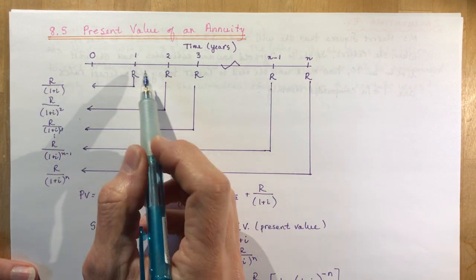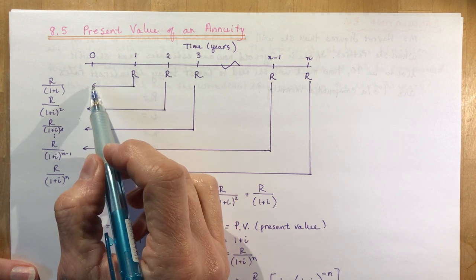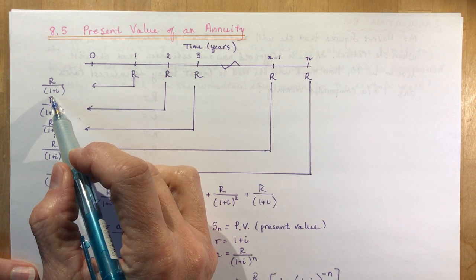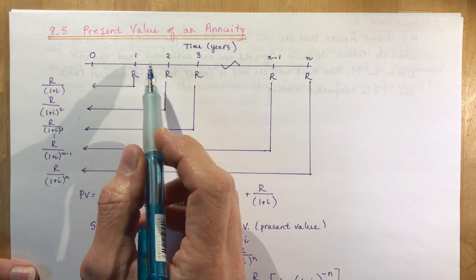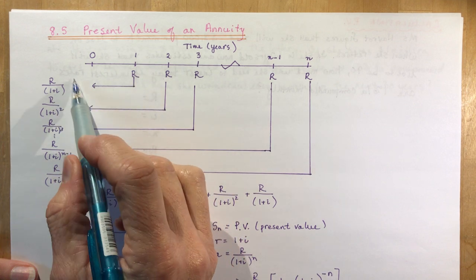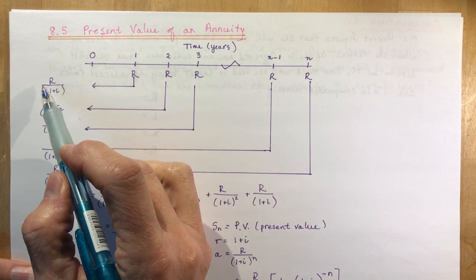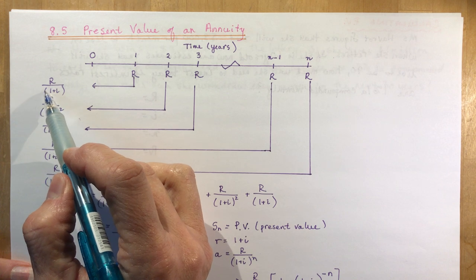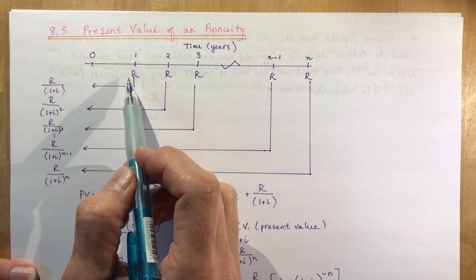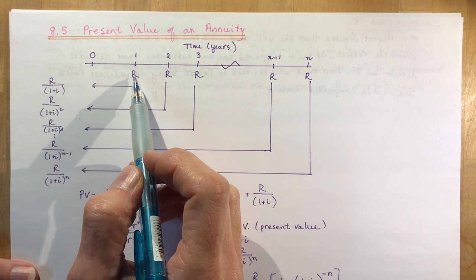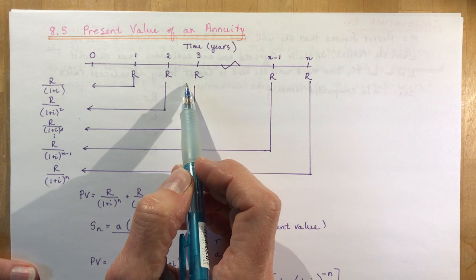Each one of these regular payments needs to be brought to the present. Obviously the amount you put in the bank today is going to be less than you would need to put in if, say for instance, I want to take out $100 every month for 30 years.